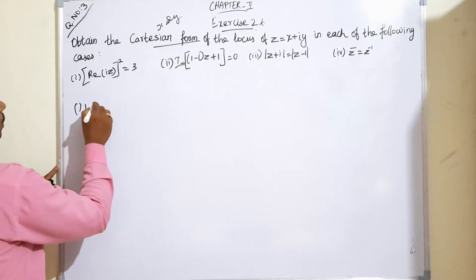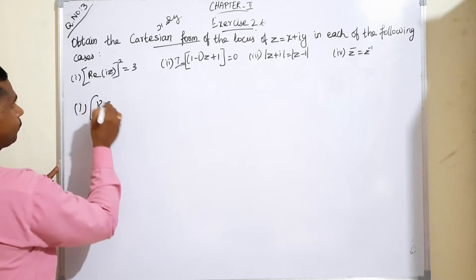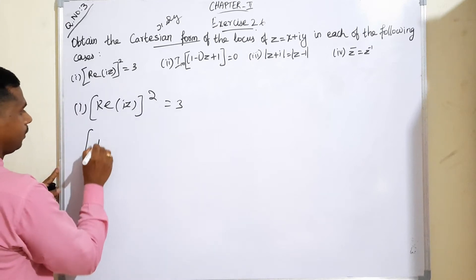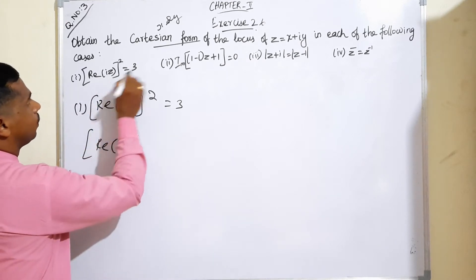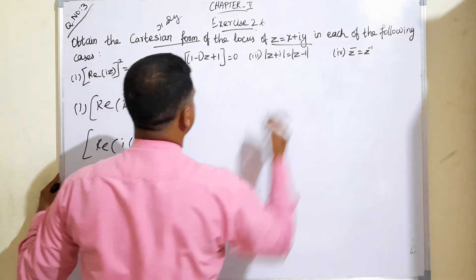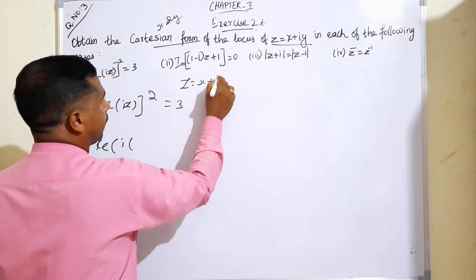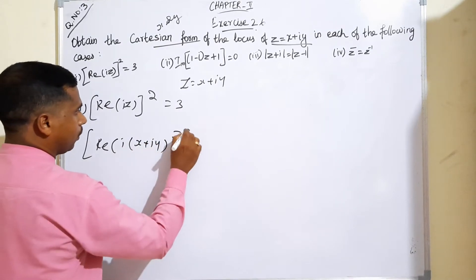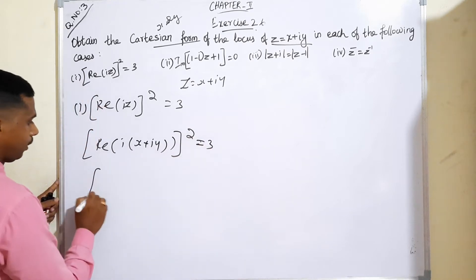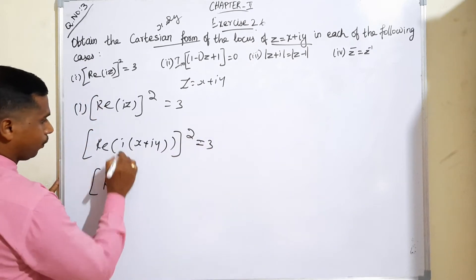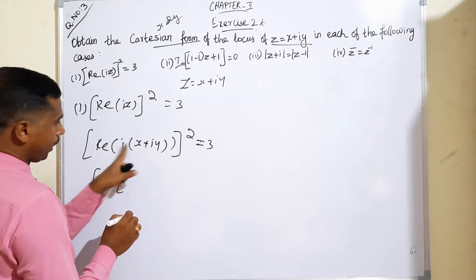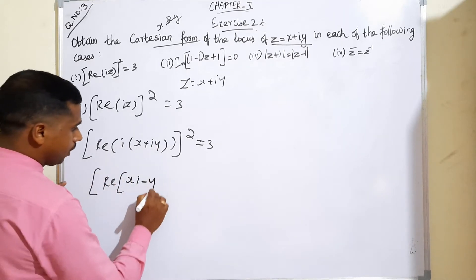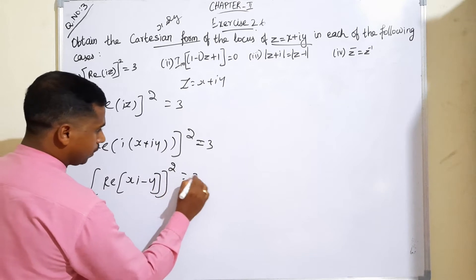Subdivision 1: The real part of (iz)² is equal to 3. Again, z is equal to x plus iy. So, i into z means i(x + iy), the whole square is equal to 3. If you remove the bracket: ix plus i²y, and since i² means minus 1, we get ix minus y. So the whole square becomes (ix minus y)² is equal to 3.